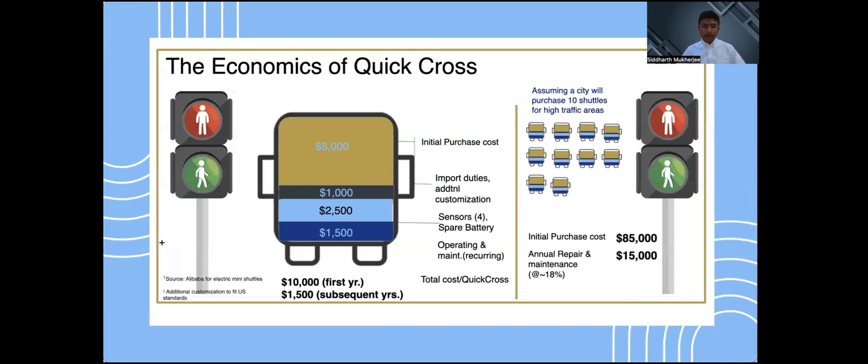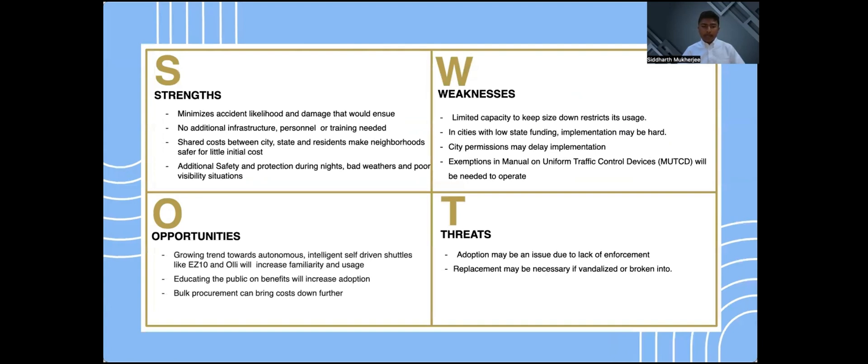We approximate that the one-time cost for each shuttle will be around $8,500. There will be an additional recurring operational and maintenance cost of about $1,500 per shuttle. Assuming a city will purchase about 10 shuttles in high accident-prone areas, the overall cost will be around $100,000. The key strength of the solution lies in minimizing accident likelihood without additional infrastructure personnel. We can leverage the increasing trend towards autonomous self-driven shuttles and public education to further enhance adoption. The chief weakness lies in obtaining the relevant government permits and enforcement would be vital to the adoption of this solution.